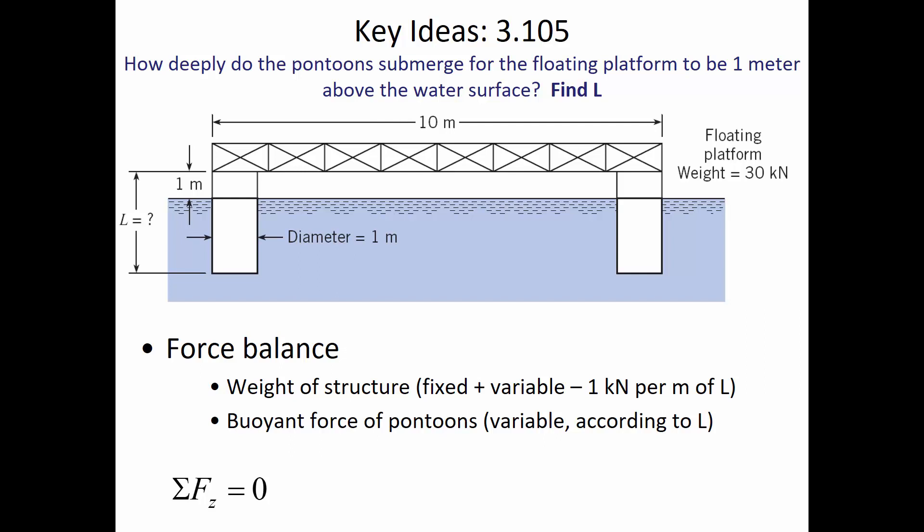Looking at the full problem statement in the book — it says 'square in plan view,' supported at each corner by a hollow sealed cylinder one meter in diameter. So there's a barrel at each of the four corners. For it to be square, it would be 10 meters in one direction and 10 meters in the other as well. The problem could be clearer than it is — that's why I'm giving you these hints.